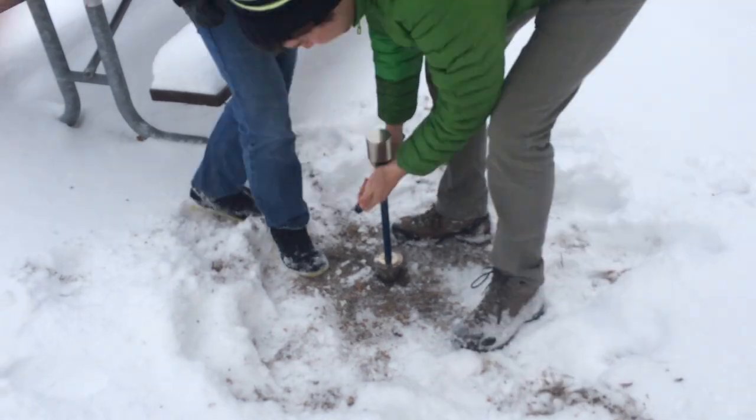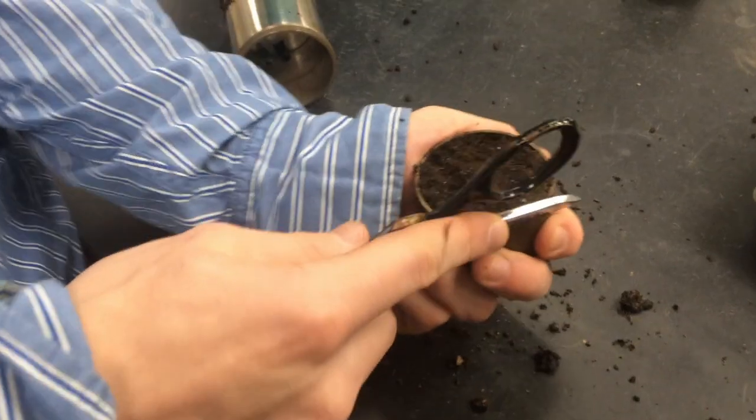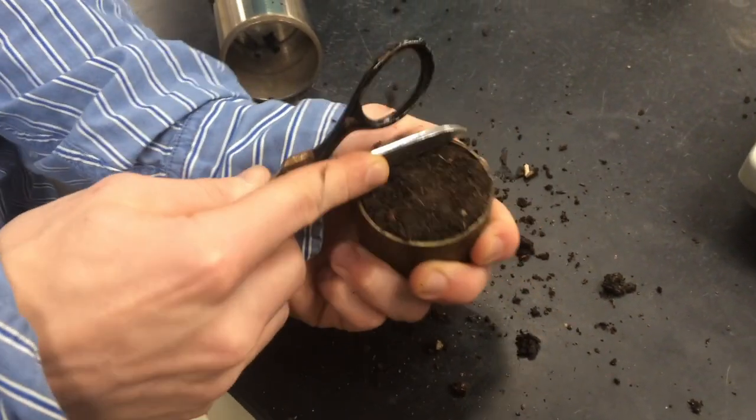After the core has been collected, remove a soil filled ring from the core sampler and use a knife to flatten the edges.